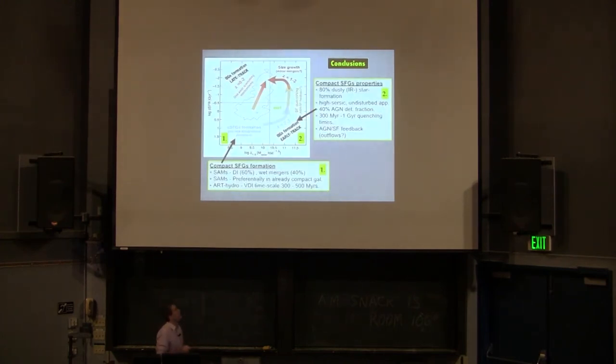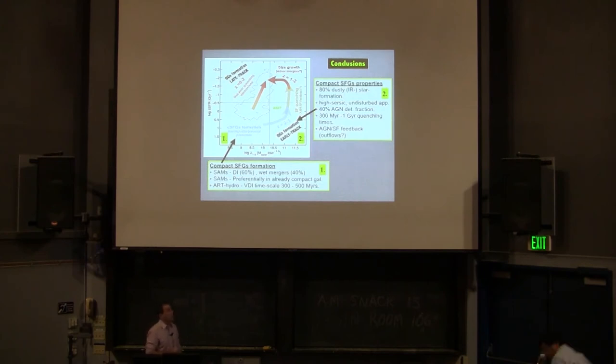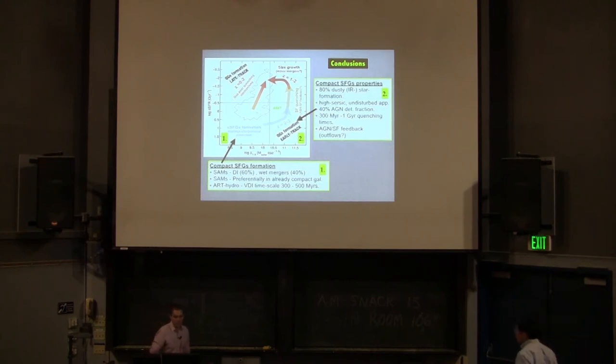To conclude, this cartoon summarizes the evolutionary picture I've been presenting, along with comparisons to models and the properties of compact star-forming galaxies.